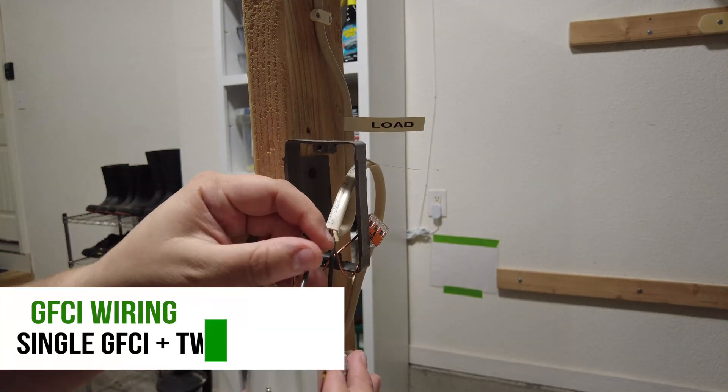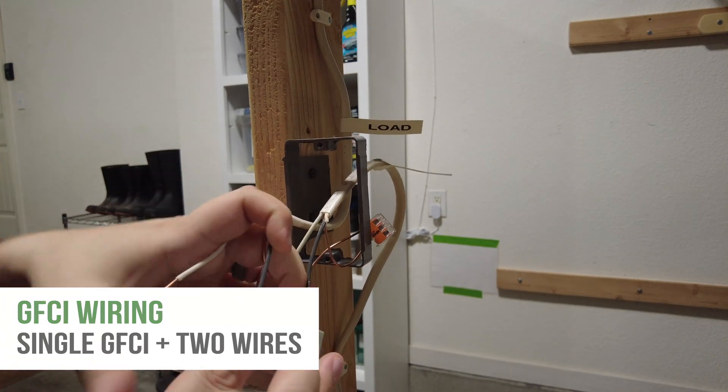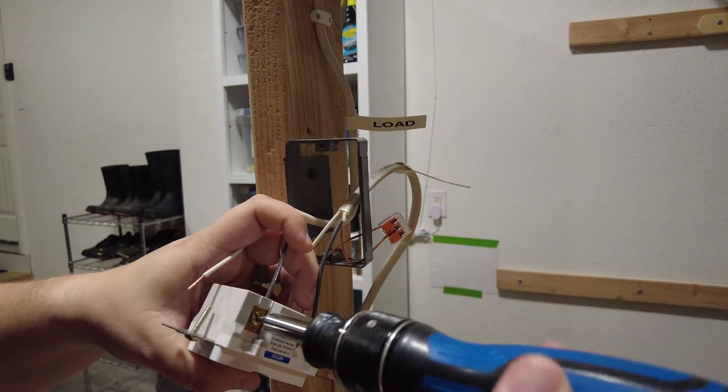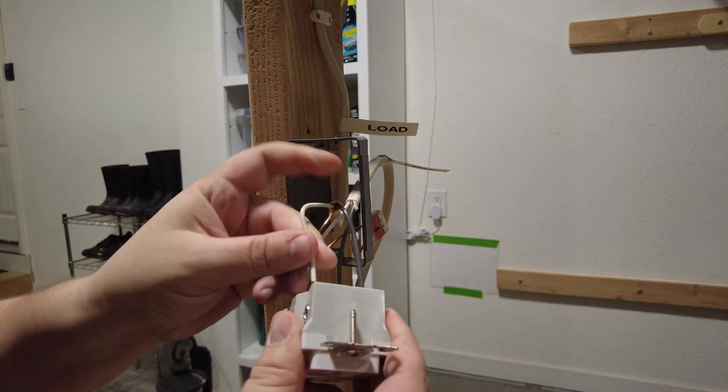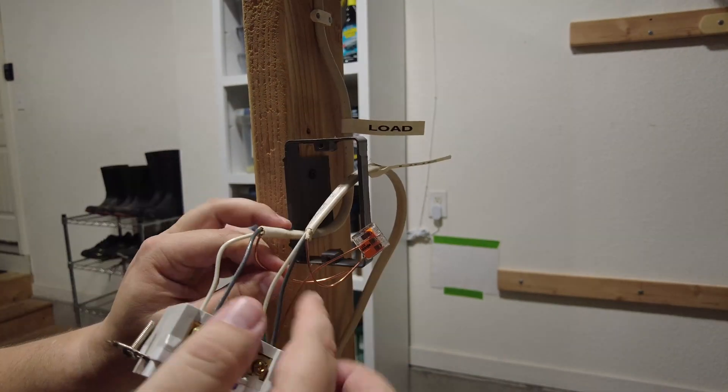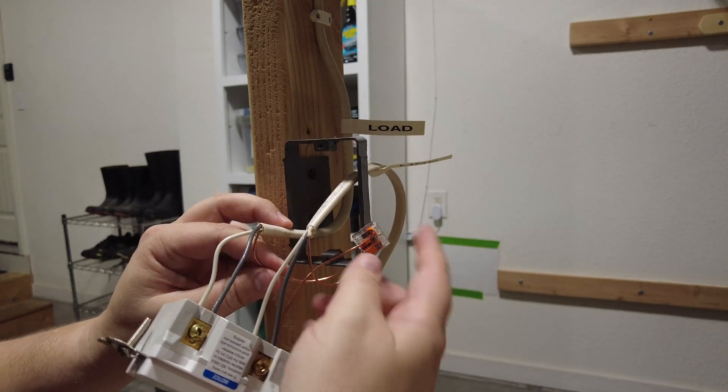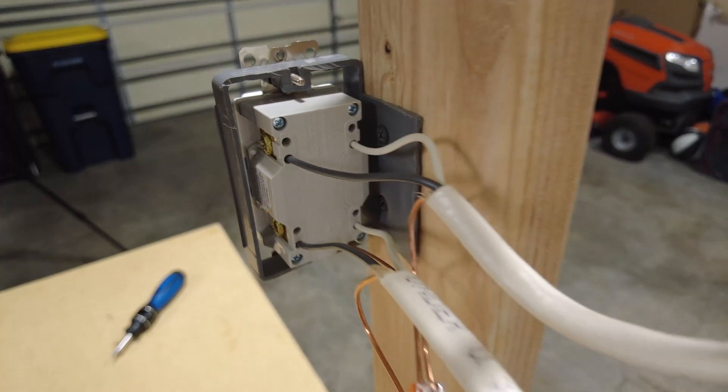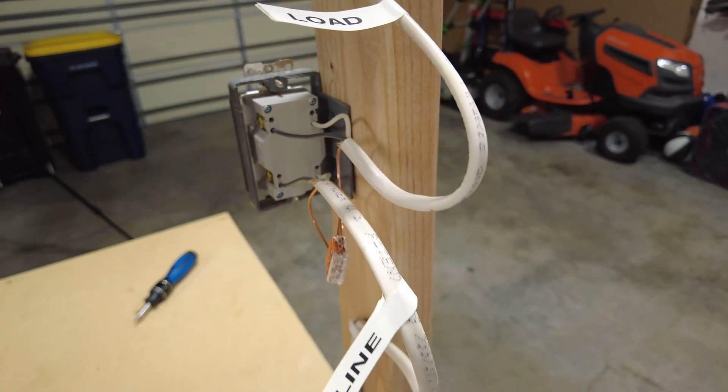So now we're going to hook these wires up to the load terminals. Same process as before. The hot wire goes to the brass terminal. And the neutral wire goes to the silver terminal. So in our case, we've already attached the ground pigtail, so we just need to make sure this final ground for the load wire is attached in this Wago as well. And then that is how you wire a GFCI.